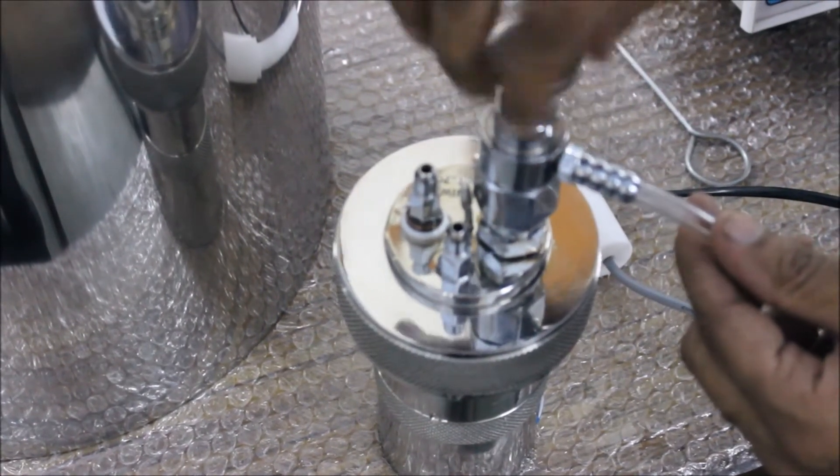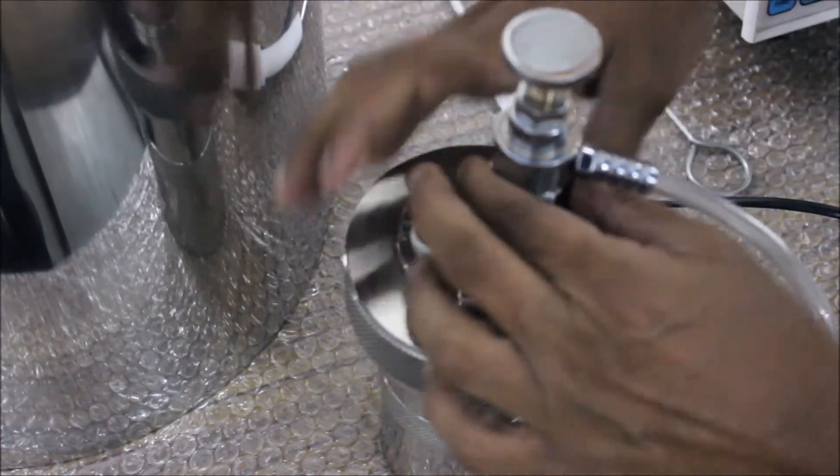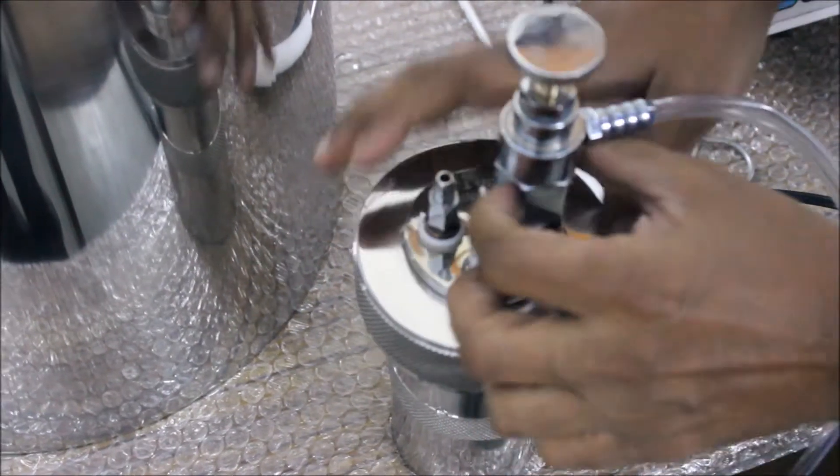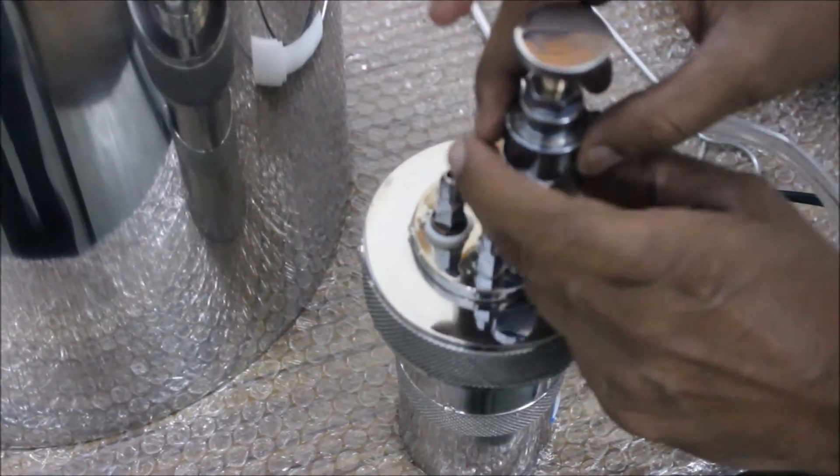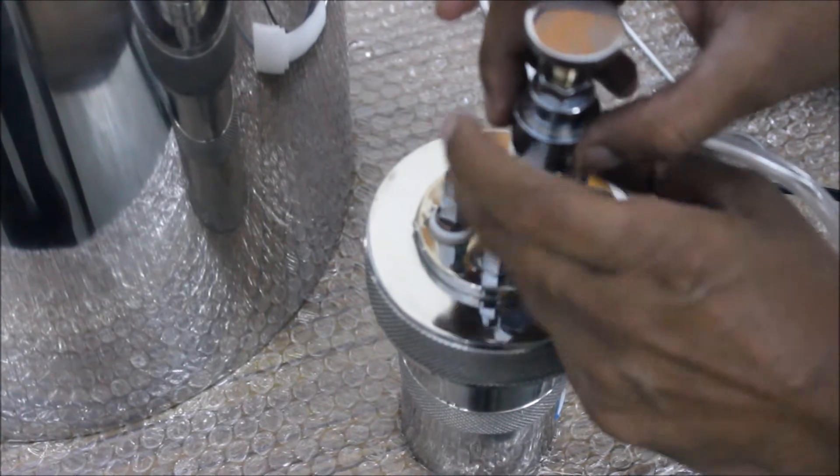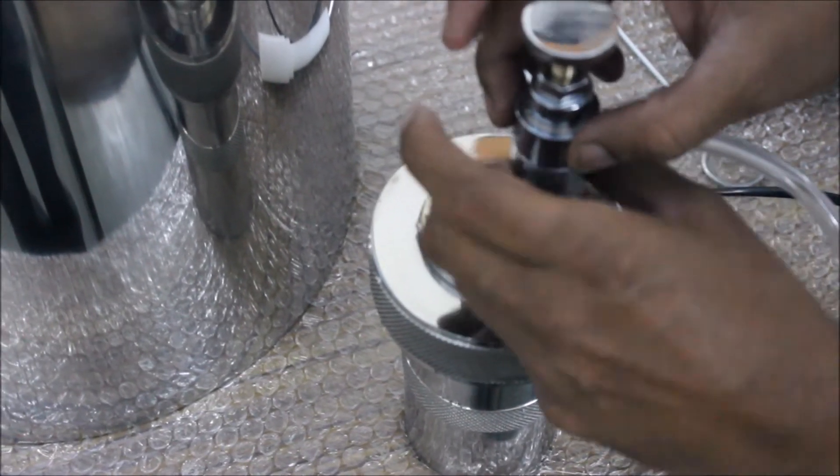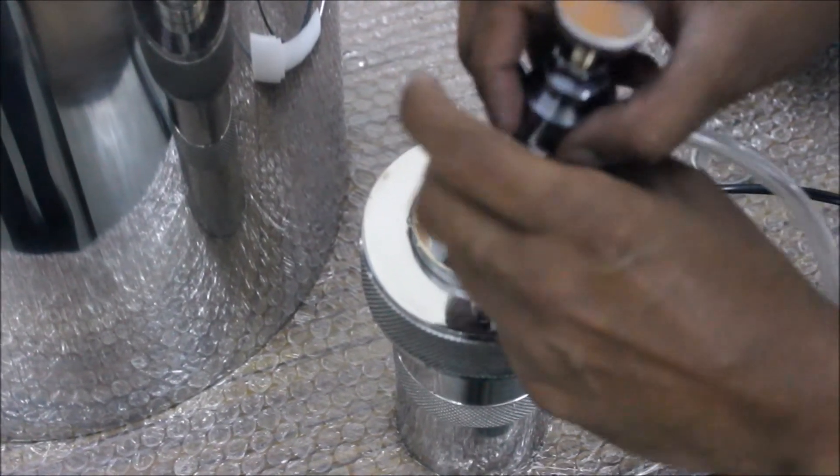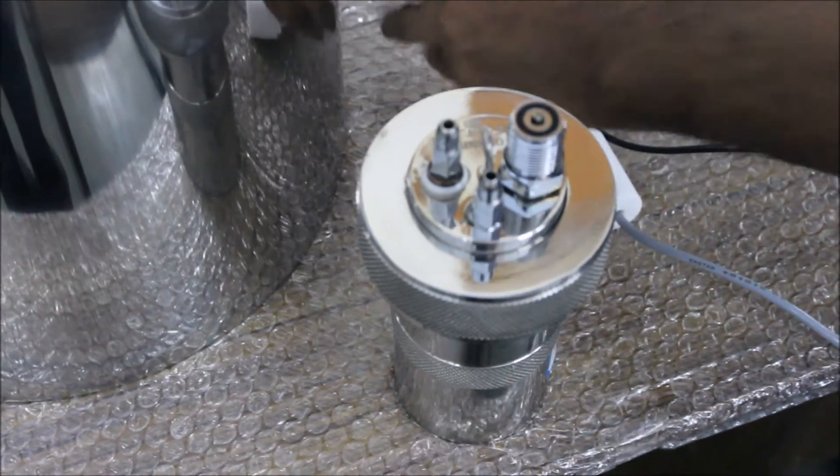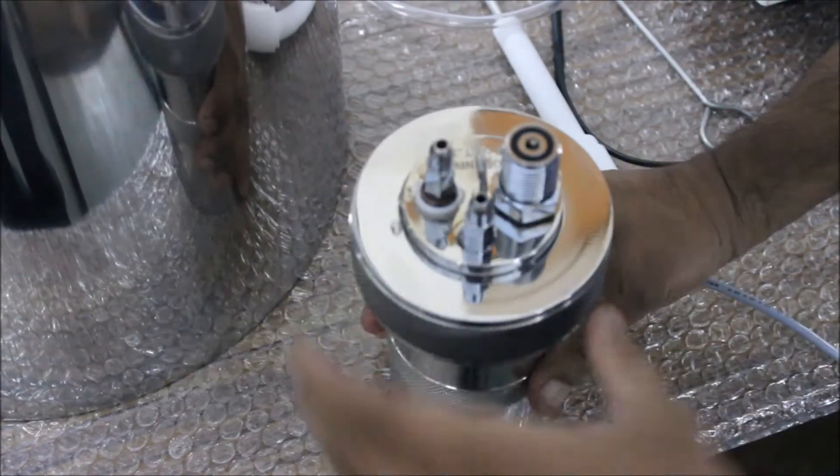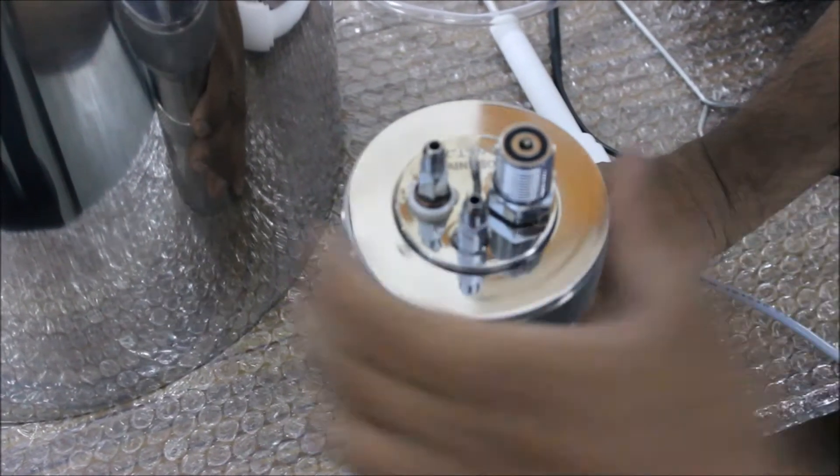Then rotate the nozzle back to its original position and unscrew the gas release valve. Once that is done, completely remove the bomb ring.